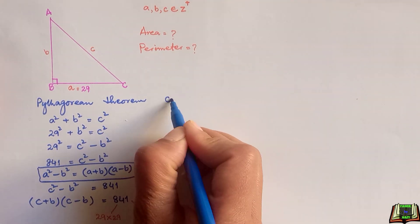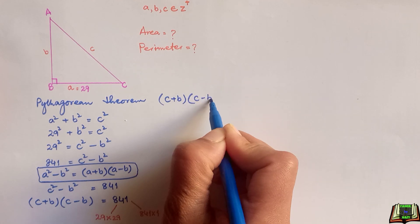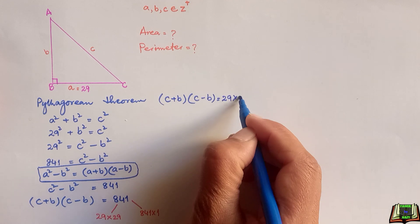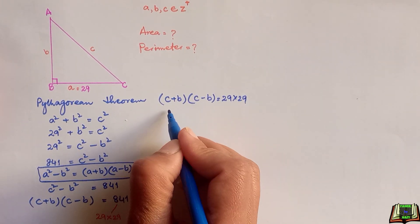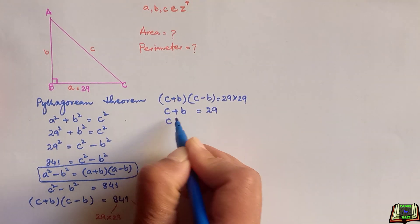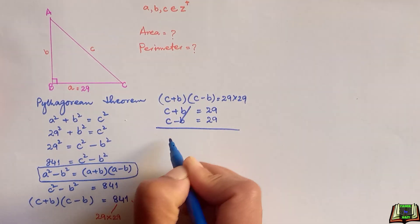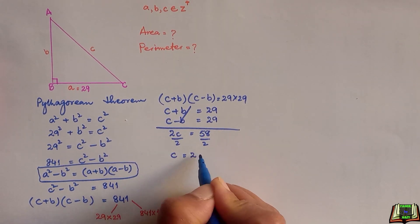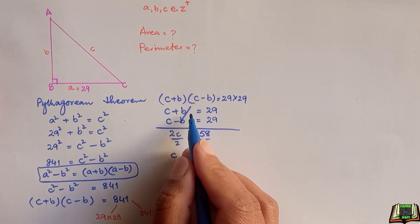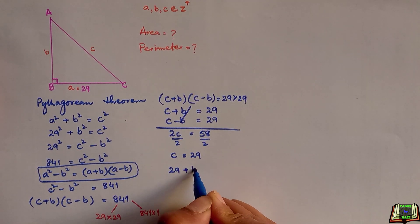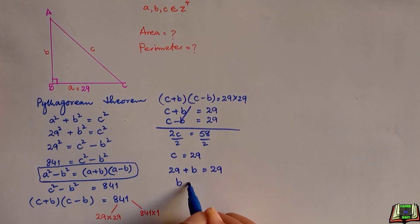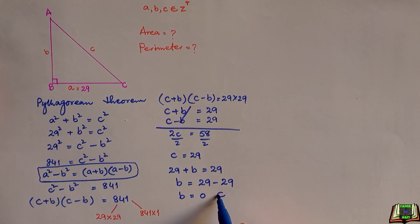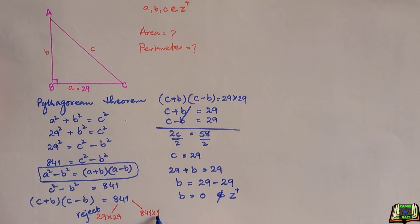Let's try the first case: (C + B)(C − B) = 29 × 29, so C + B = 29 and C − B = 29. Adding both equations gives 2C = 58, so C = 29. Substituting back, 29 + B = 29, which gives B = 0. Since 0 does not belong to the positive integers, we reject this case and move to the second one.